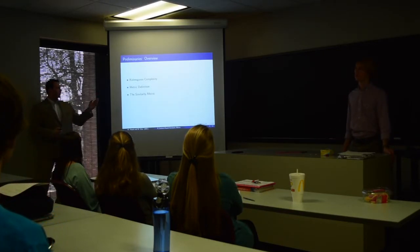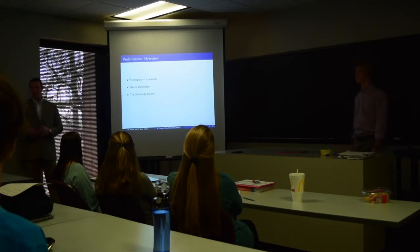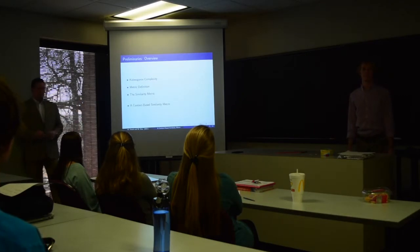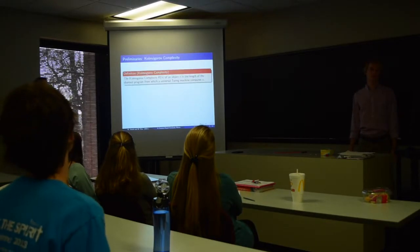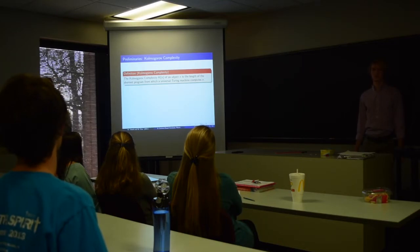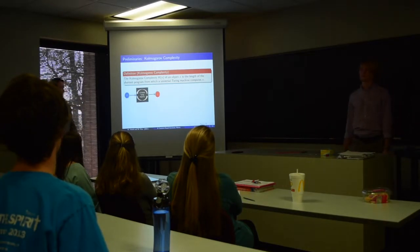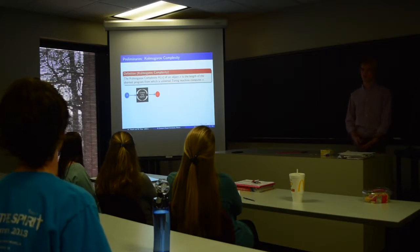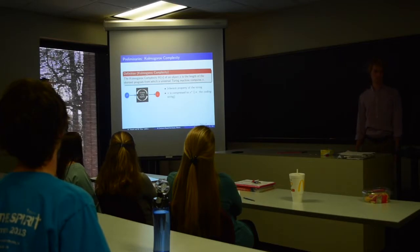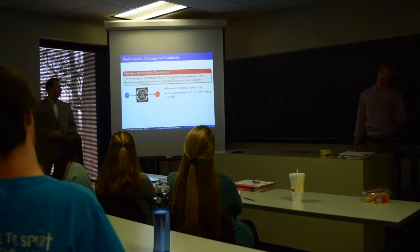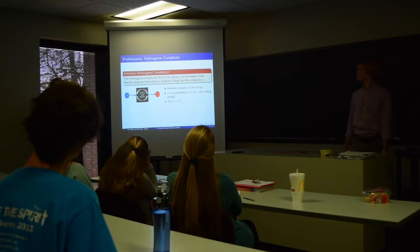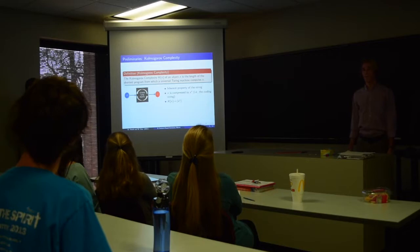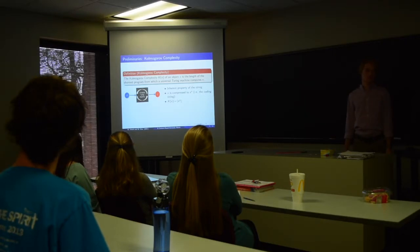Here's a quick overview. We need to cover the Kolmogorov complexity, what a metric is, and the similarity metric, which is mainly what we use. The Kolmogorov complexity of some object X is the length of the shortest program that you can feed into a Turing machine to compute X. We have some coding string X*, which is a short description for X. You feed it through a universal Turing machine, it runs some algorithm, and outputs X. The complexity is an inherent property of the string X — X is compressed to X*, the coding string. The Kolmogorov complexity is concerned with the length of this coding string, the shortest description. It's the semantic information we're worried about: the shortest possible way we can write something.